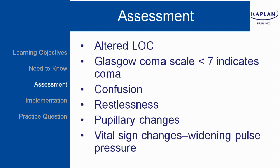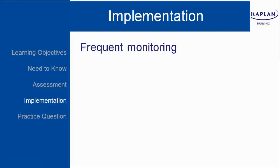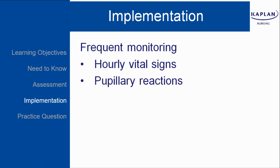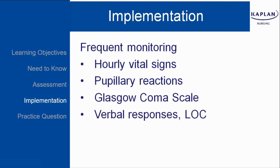Vital sign changes are a later sign, including widening pulse pressure. For implementation for the client with increased ICP, we want to have frequent monitoring: hourly vital signs, watch for increased systolic pressure and widening pulse pressure, and bradycardia — that's called Cushing's Triad, and it's a very late sign of increased ICP. We want to frequently monitor pupillary reactions, the Glasgow Coma Scale, verbal responses, and changes in level of consciousness.